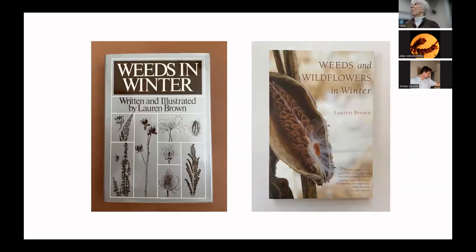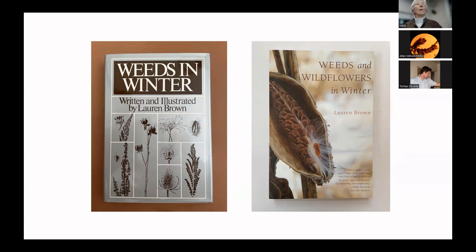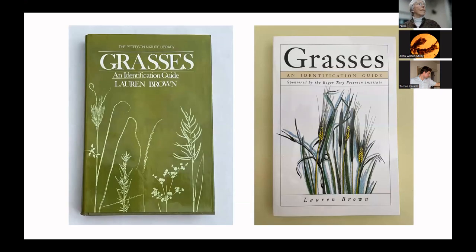I already had one book published: Weeds in Winter, a guide to identifying dried herbaceous plants in winter. That gave me the courage to try for a second. And in 1979, Houghton Mifflin came out with Grasses: An Identification Guide. On the left is the hardcover; on the right is the paperback that came out soon thereafter.